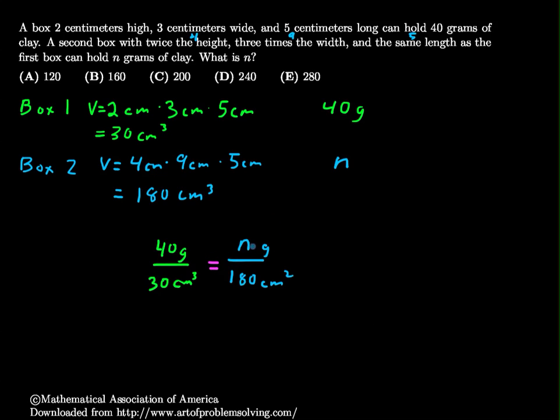Let me multiply both sides by 180 cubic centimeters. That way I won't need to deal with all of this work. This cancels out. 180 divided by 30 is not 60, sorry, it's 6. So I have 6.